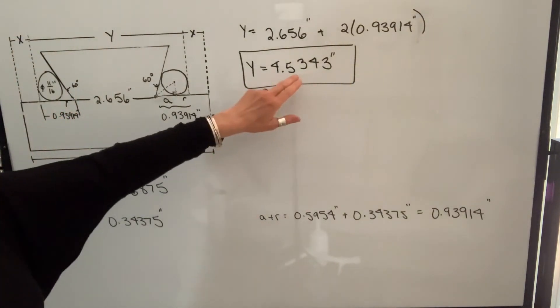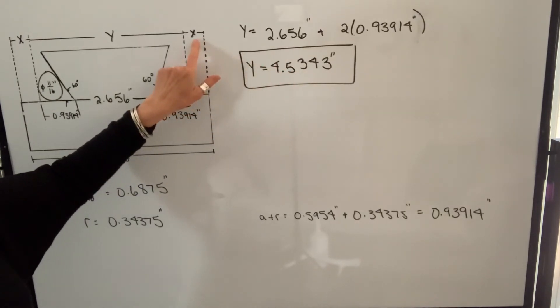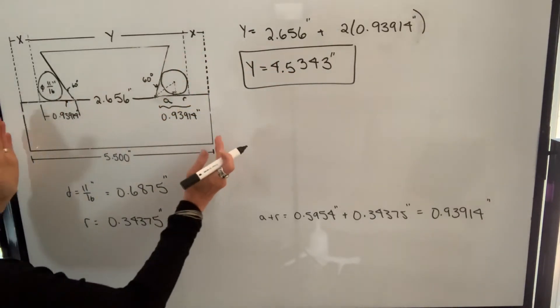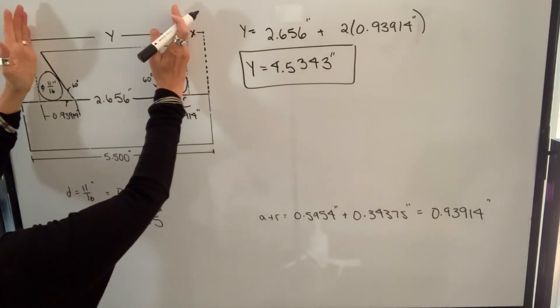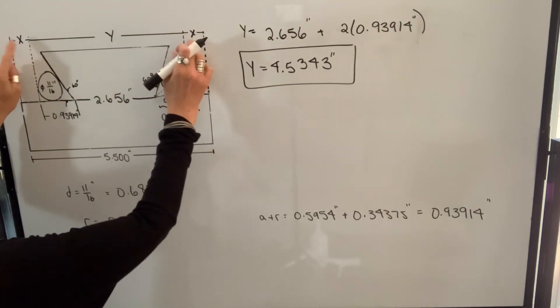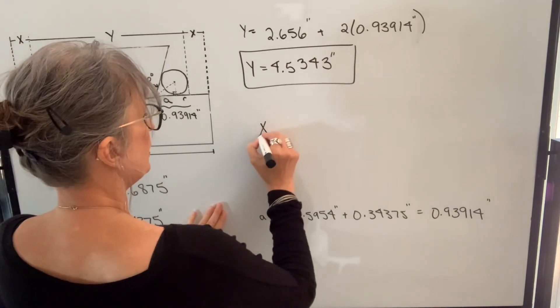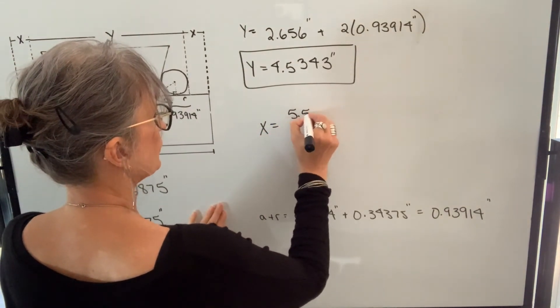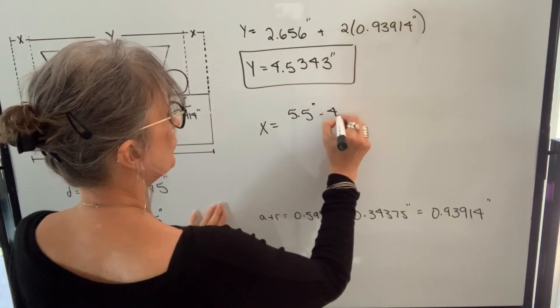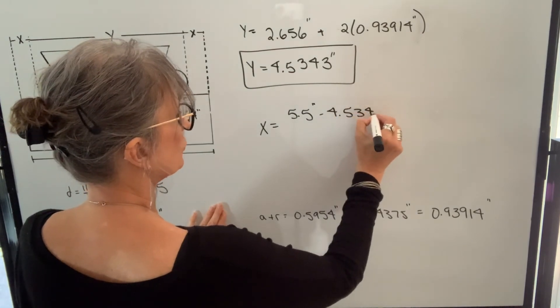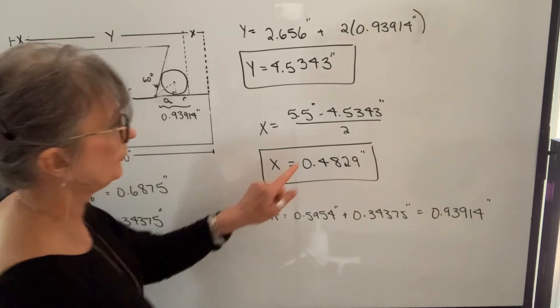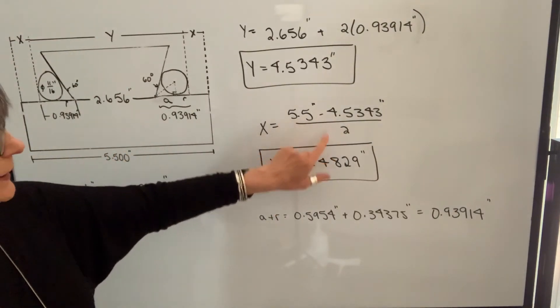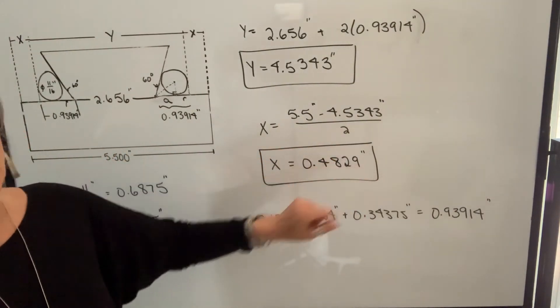And now we can use that value to find the value of X. We know that 5.5 inches minus Y will give us X plus X. So X will equal 5.5 inches minus 4.5343 inches divided by 2. When we calculate that, we get 0.4829 inches.